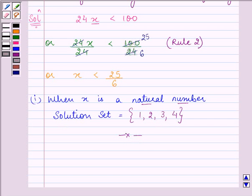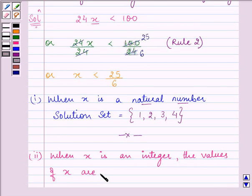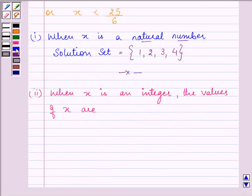And, the second part, when x is an integer, the values of x will be all the natural numbers, that is for sure, make it a whole number and then the negative numbers also.